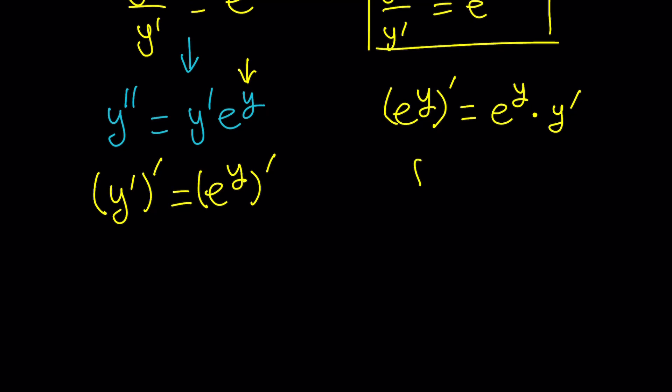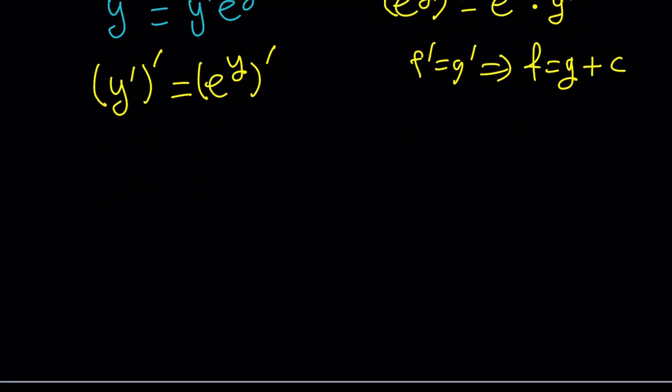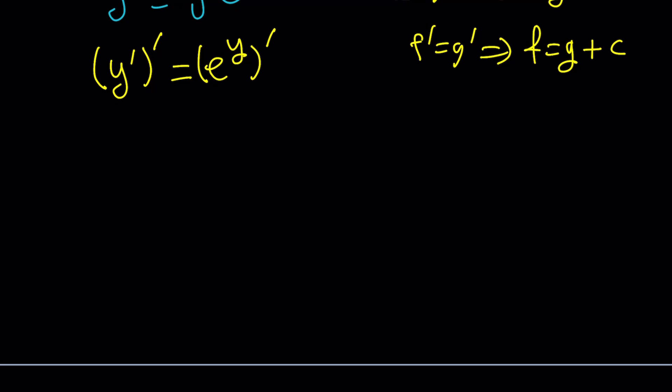So we're replacing both sides with what they are. And now we have derivatives on both sides. It's kind of like this. f prime equals g prime. And what does that imply? It implies that f is equal to g, but differs by a constant. Of course. You have to include the constant. The constant can be zero or anything, but we have to include it. Otherwise, you lose all the points on the test. So now it's going to be y prime equals e to the y plus a constant.